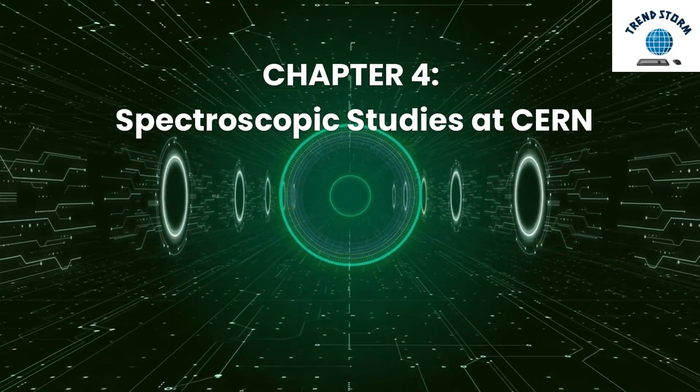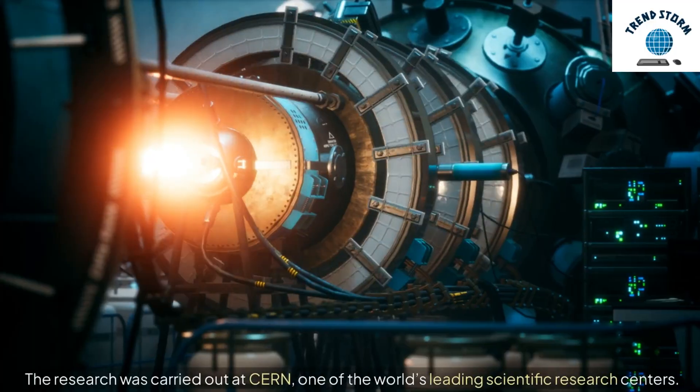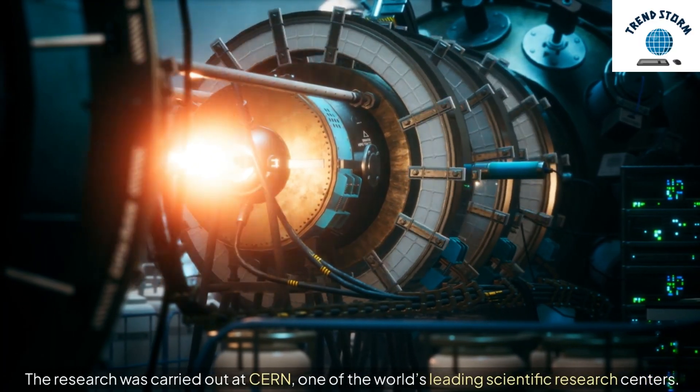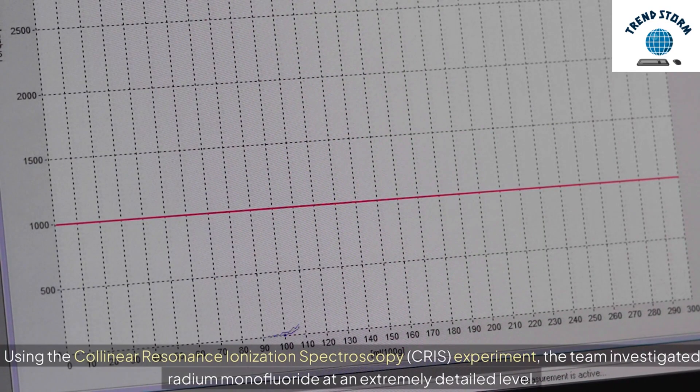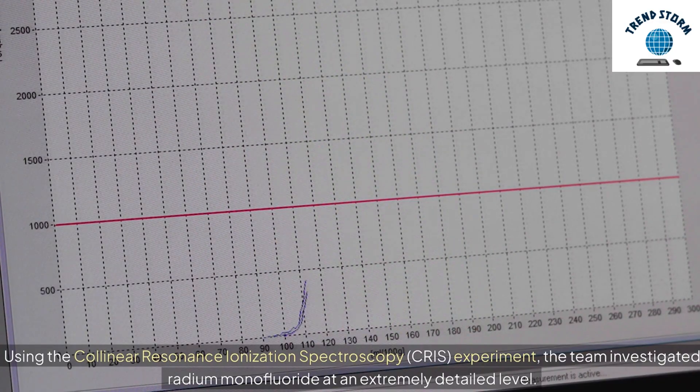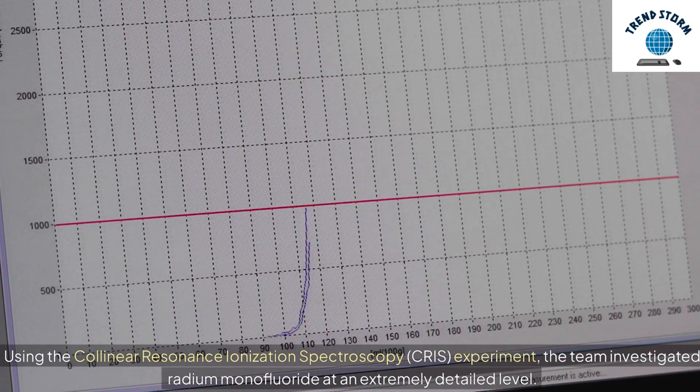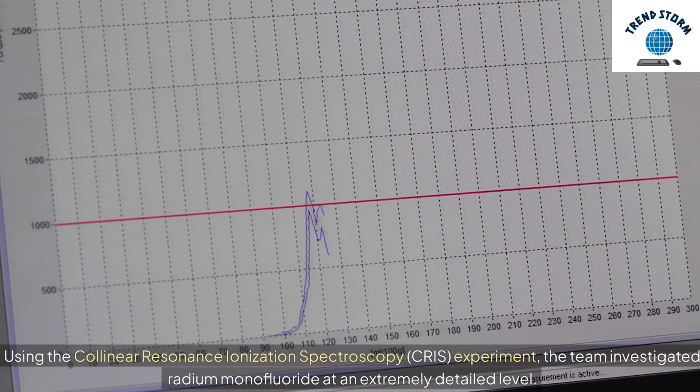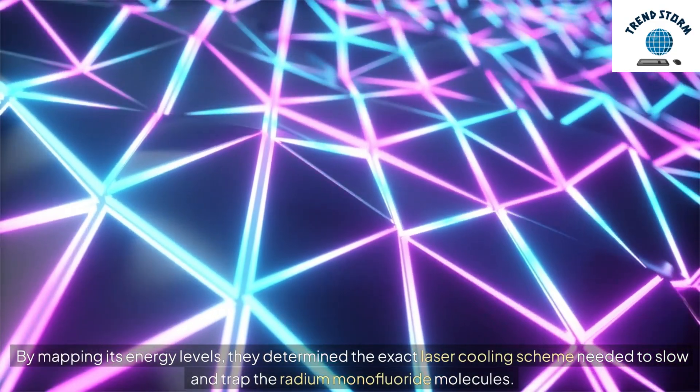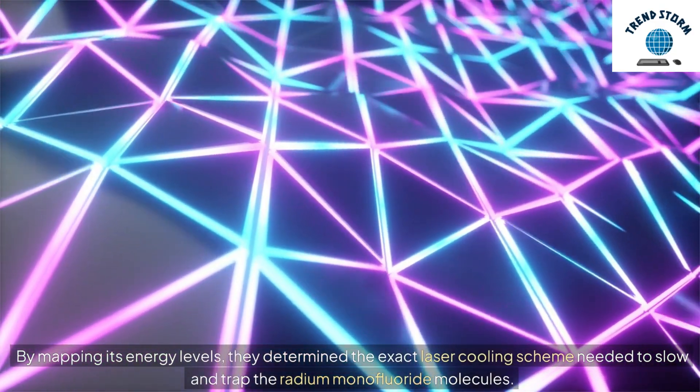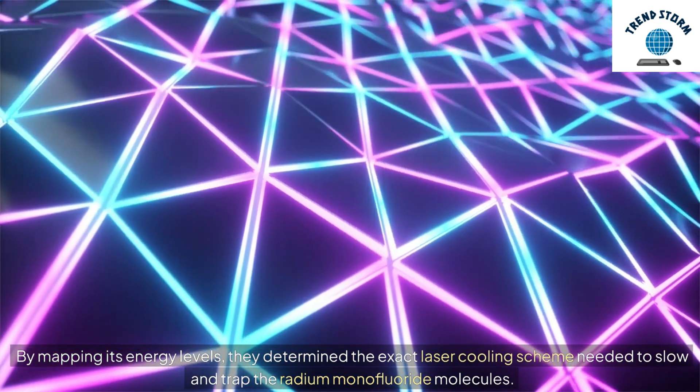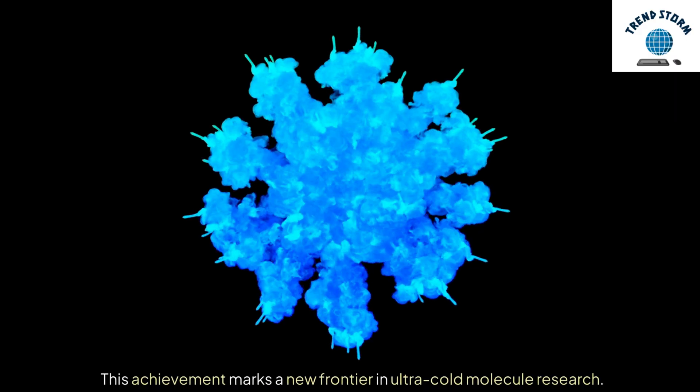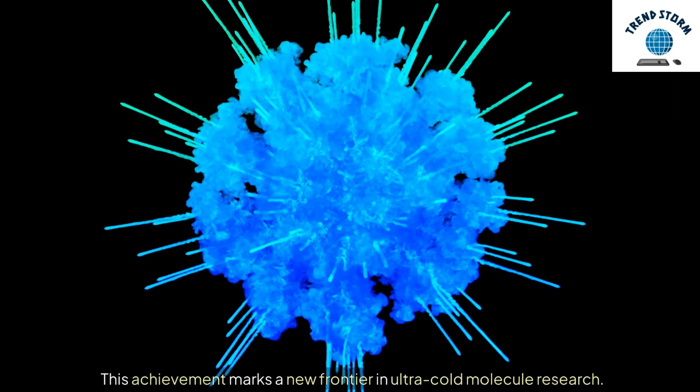Chapter 4: Spectroscopic Studies at CERN. The research was carried out at CERN, one of the world's leading scientific research centers. Using the Collinear Resonance Ionization Spectroscopy (CRIS) experiment, the team investigated radium monofluoride at an extremely detailed level. By mapping its energy levels, they determined the exact laser cooling scheme needed to slow and trap the radium monofluoride molecules. This achievement marks a new frontier in ultra-cold molecule research.